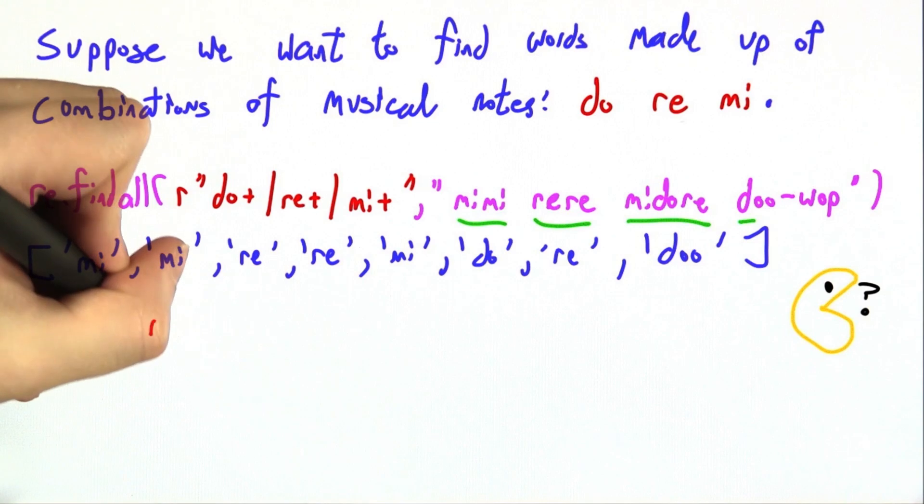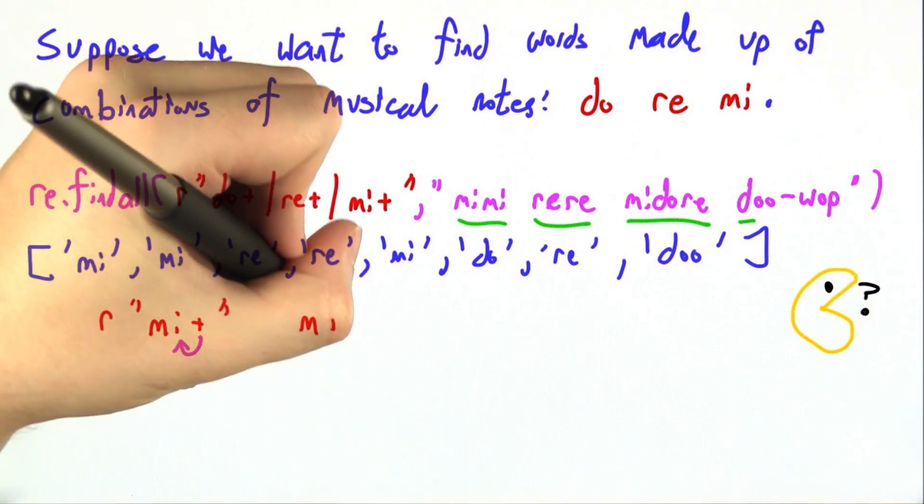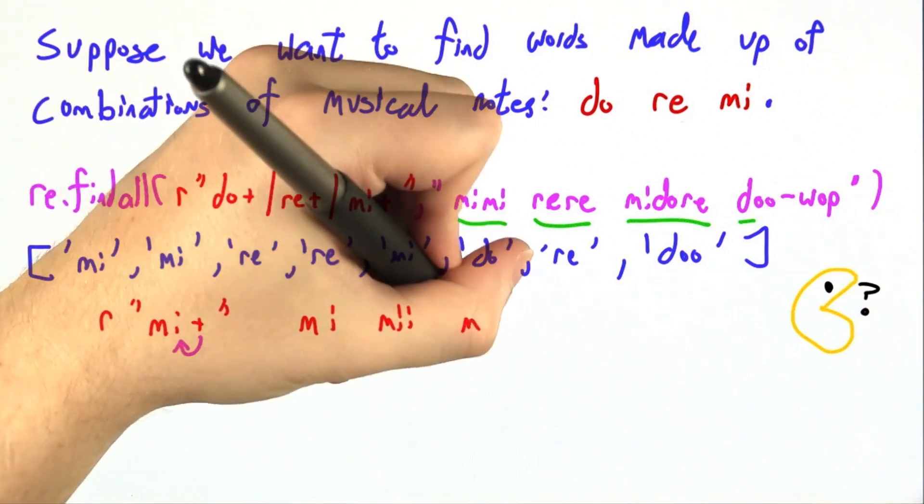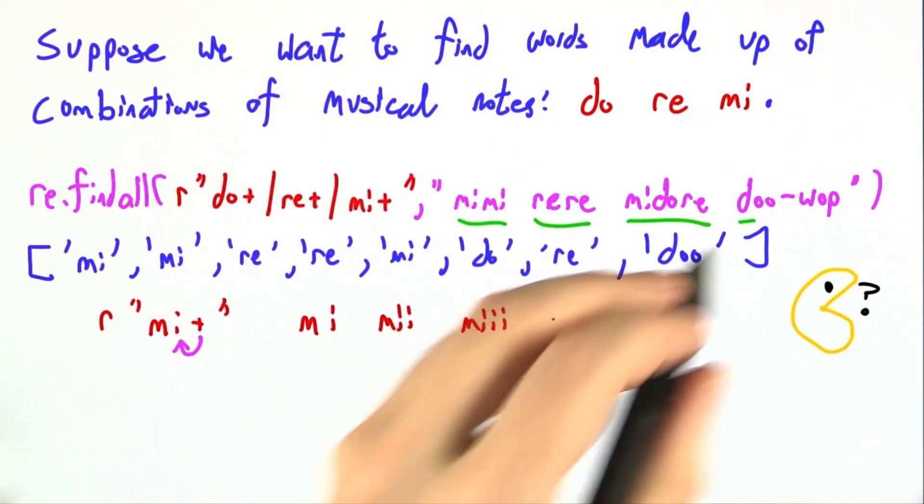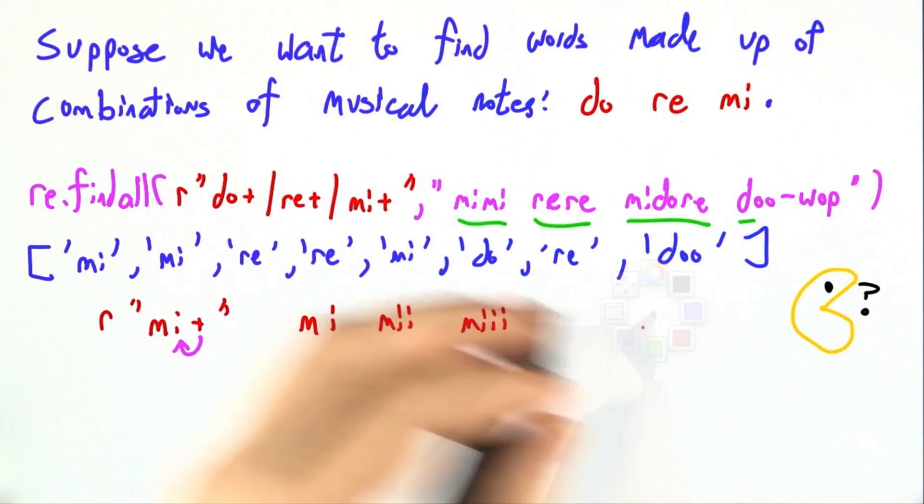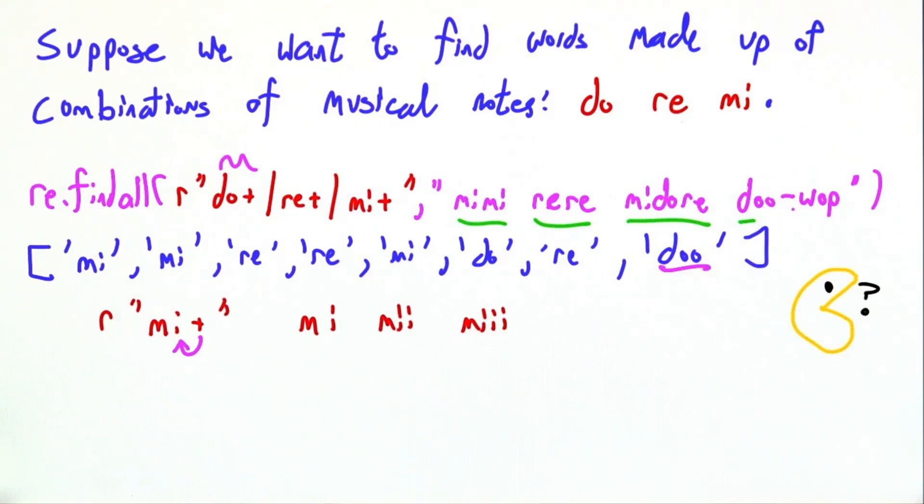Well, if you think about it, in the regular expression mi plus, the plus only affects the i. So really, this is getting mi, mi, mi, an entire virtue of selfishness, rather than the thing that we wanted. And you can actually see this over here at the end, where do plus got us do from do wop.